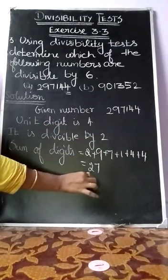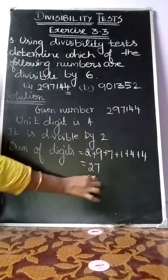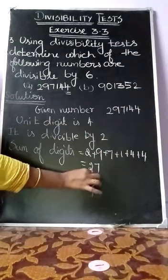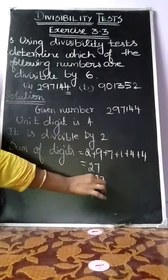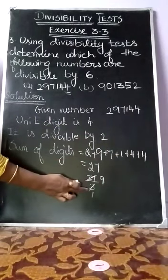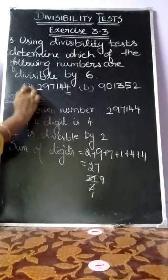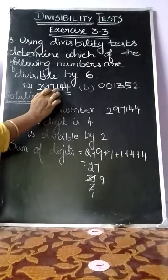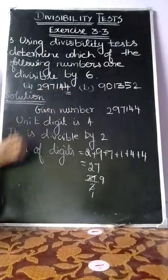27 divided by 3: 3 nines are 27, so the number 27 is divisible by 3. Therefore, automatically the number 297144 is divisible by 3.